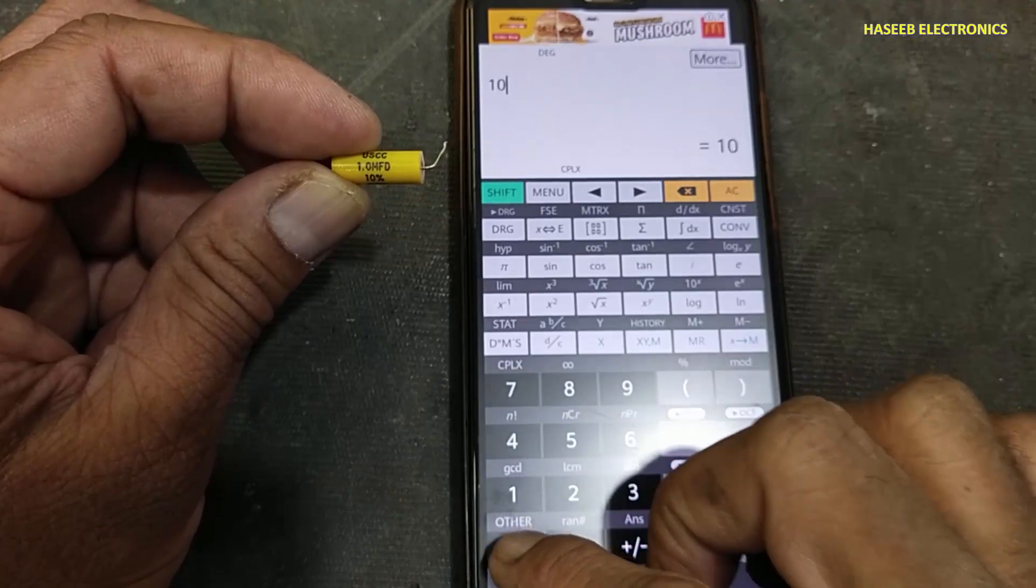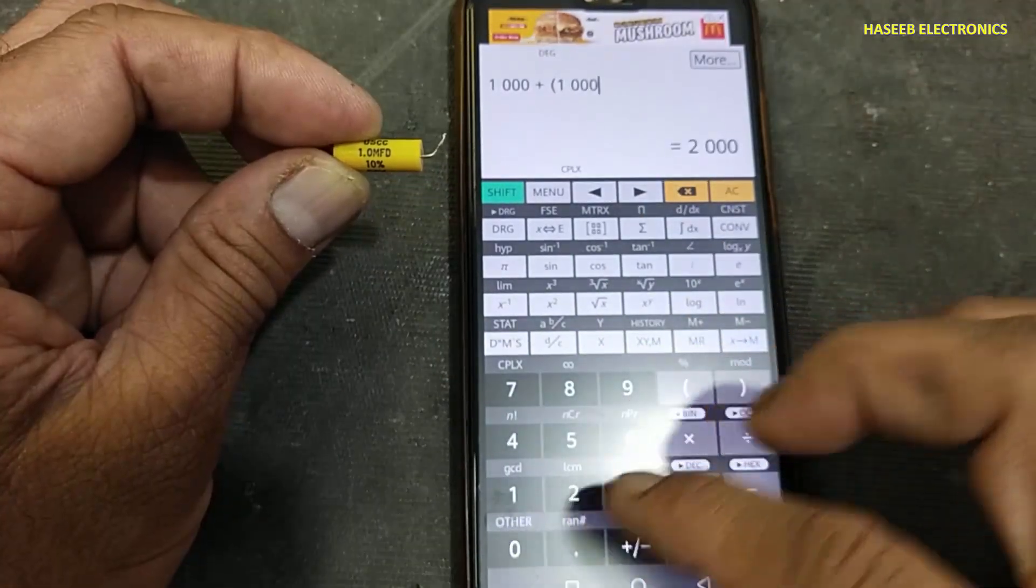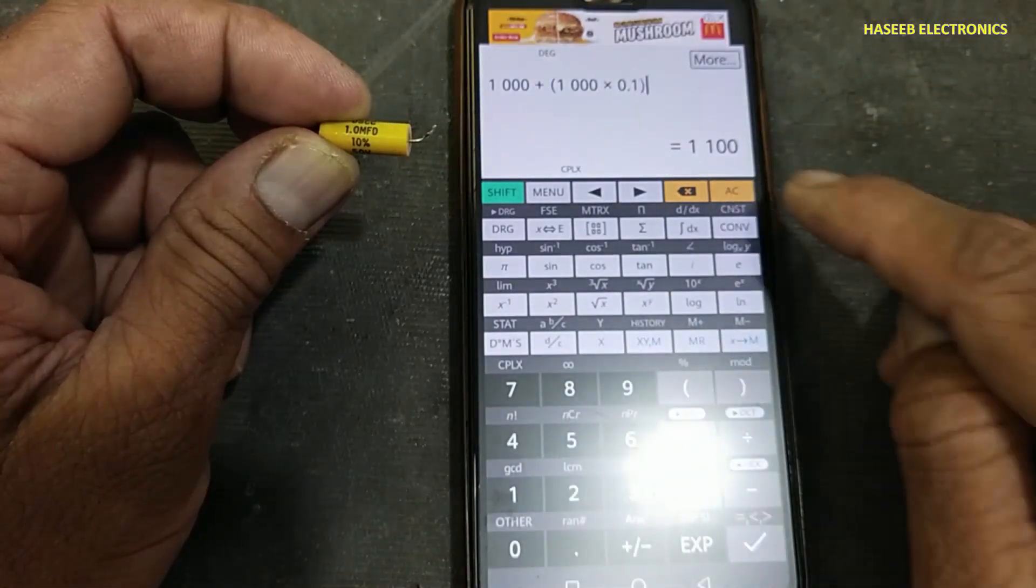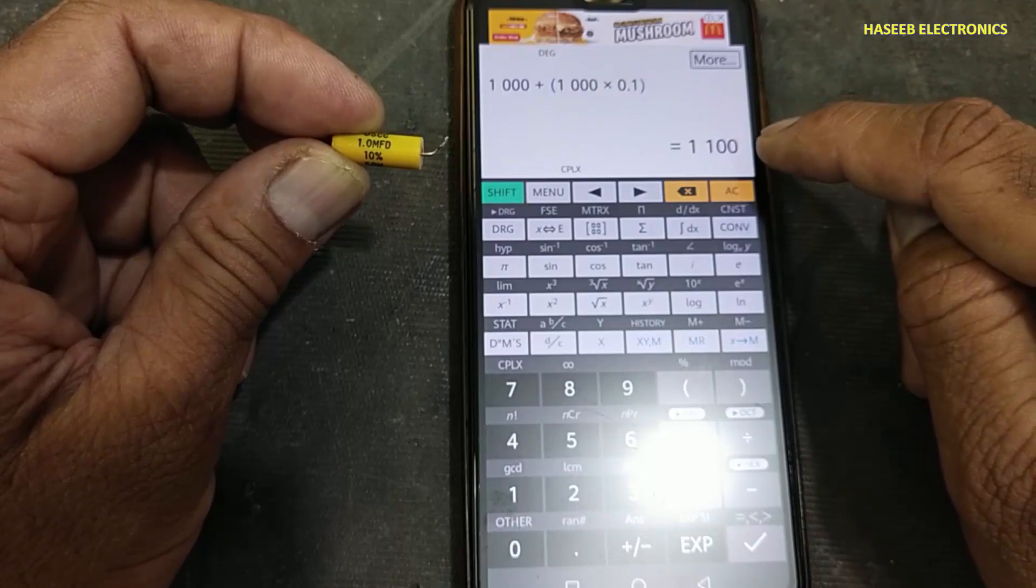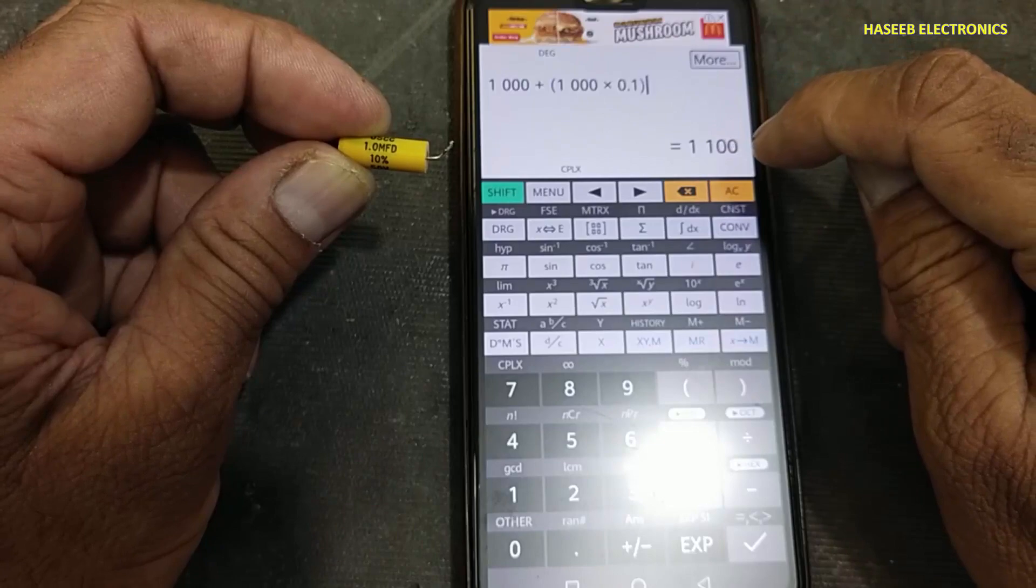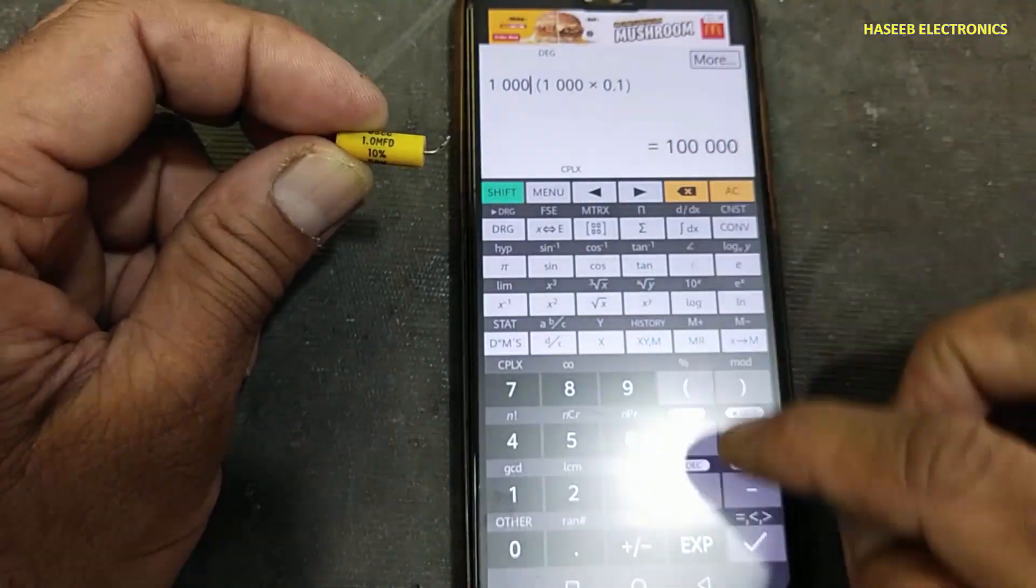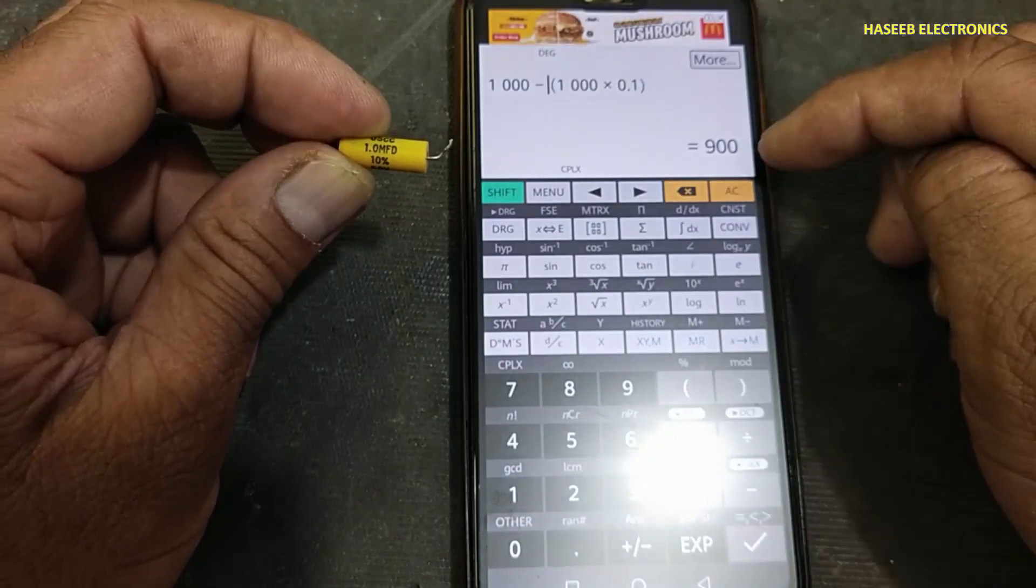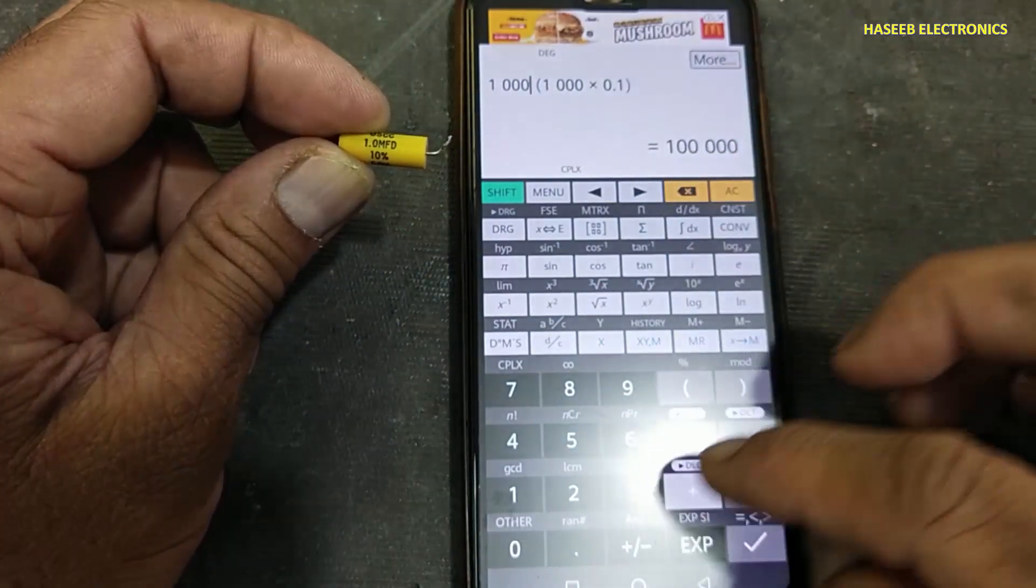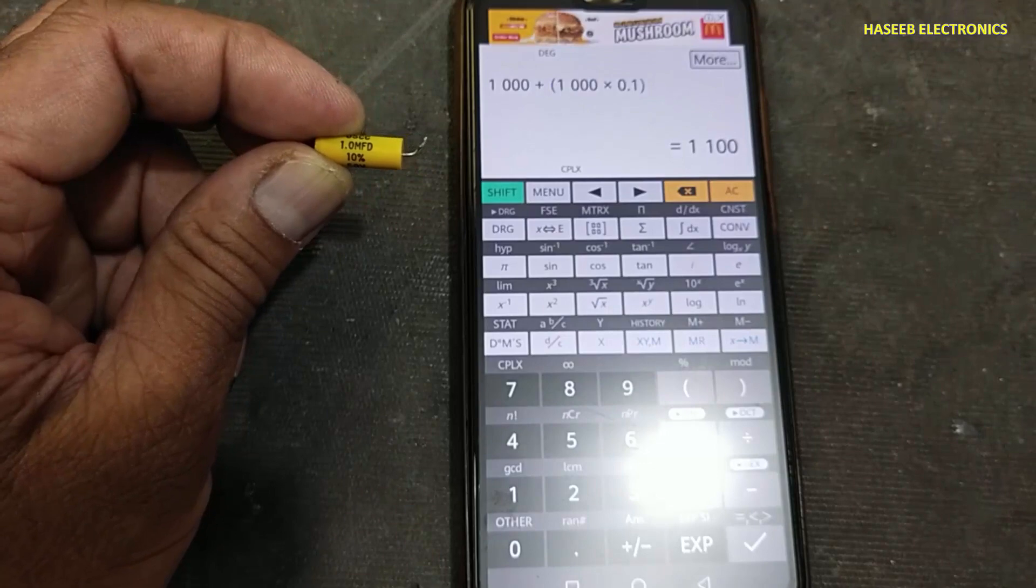1 microfarad, that means 1000 nanofarad, plus (1000 multiplied by 0.1) equals 1100 nanofarad. That means 1.1 microfarad. In this calculation, here, minus: 900 nanofarad to 1100. This is its value.